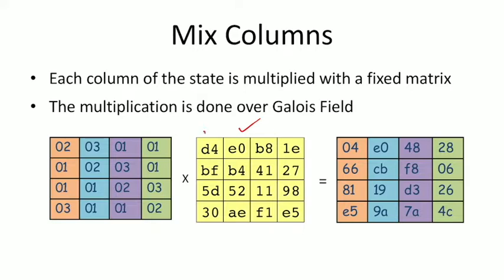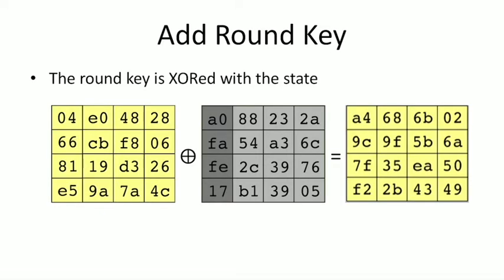If this is our current state matrix and we multiply each column separately using the fixed matrix, we get the new state matrix. Then in the AddRoundKey step, each byte of the state is XORed with the corresponding byte of the round key — for example, 04 XORed with A0 gives A4.